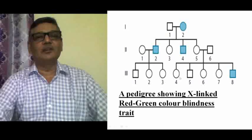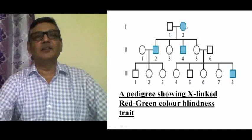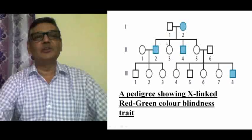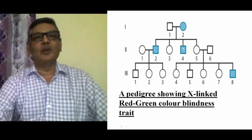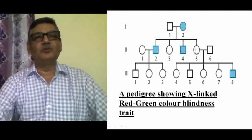Here is a pedigree showing the inheritance of red-green color blindness across three generations. In the first generation, the female is a colorblind woman. Having two X chromosomes with the mutant allele on both, that allele will definitely pass to her sons. This couple has four children — two males who are colorblind, having received the colorblind allele from the mother.